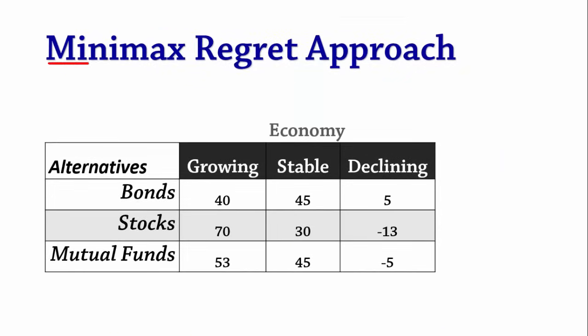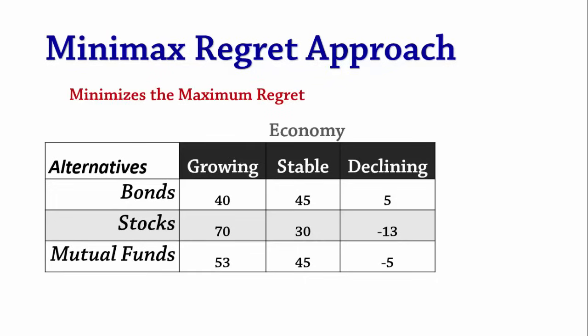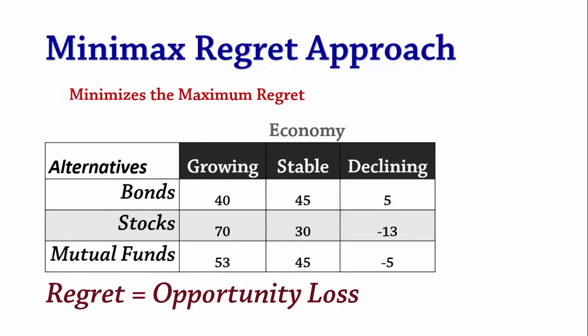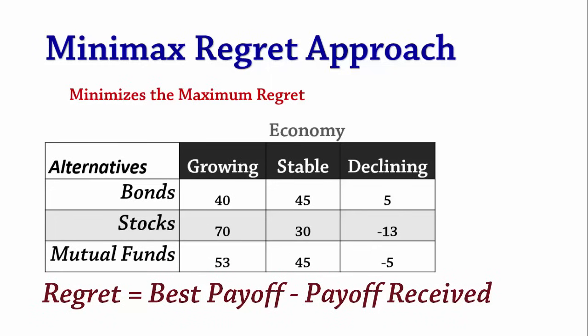Therefore, the pessimistic or conservative approach is to invest in bonds. The minimax regret approach. Using this approach, we choose the alternative with the minimum of all maximum regrets across all alternatives. Regret, also known as opportunity loss, is the difference between the best payoff in a particular state of nature and the actual payoff received.